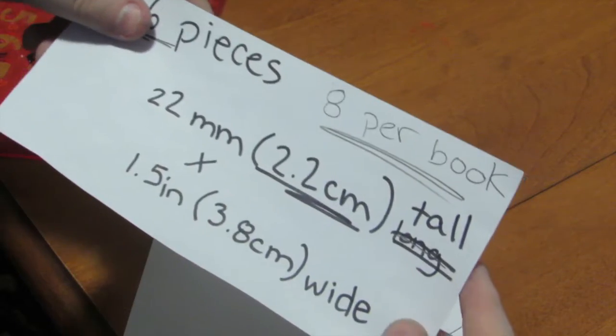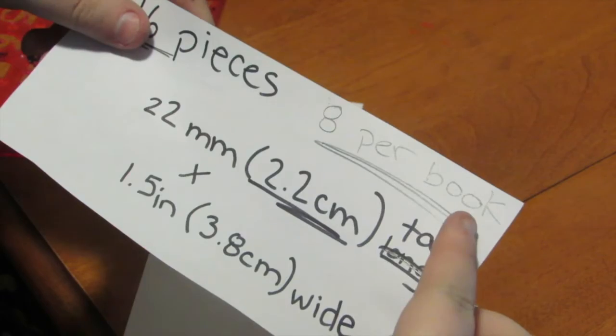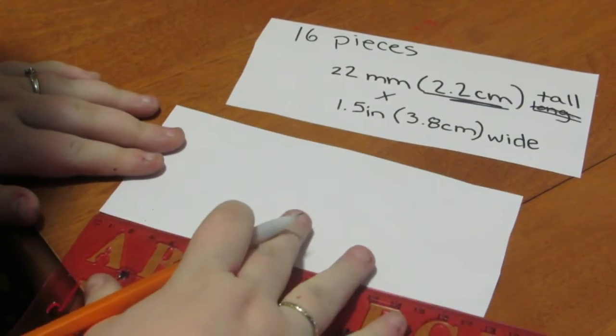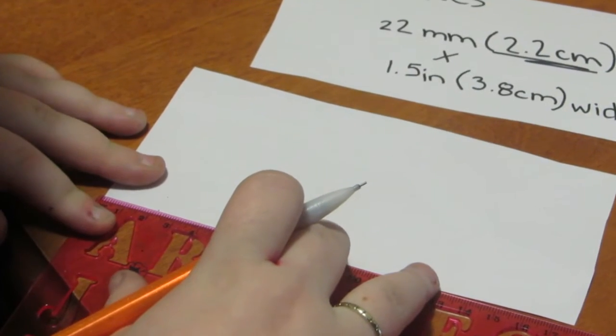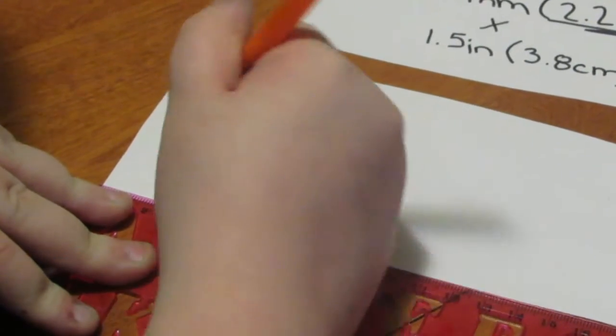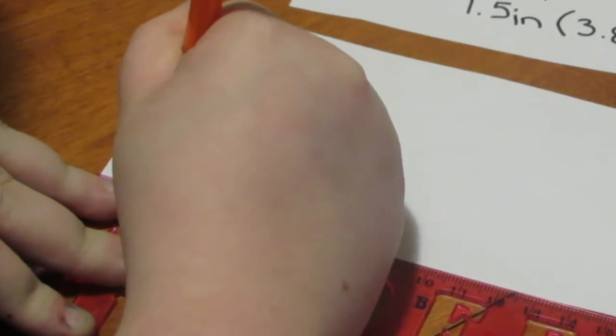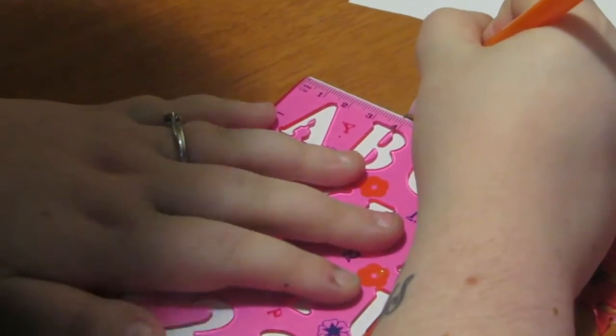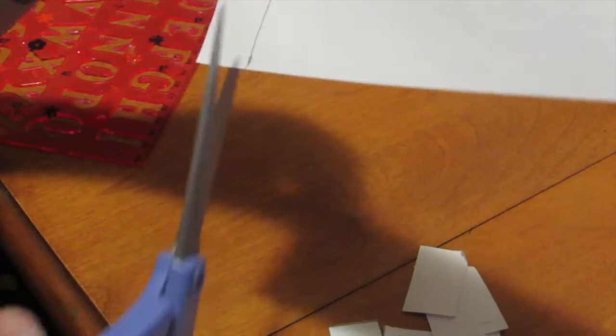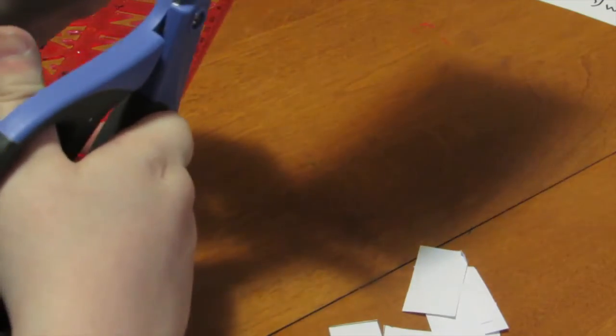Make sure that the cover lines up the way you want it and then we are going to get started on making the inner pages of your book. You are going to be making 16 pieces of paper, eight for each book with the dimensions of 2.2 centimeters or 22 millimeters tall by 3.8 centimeters long.